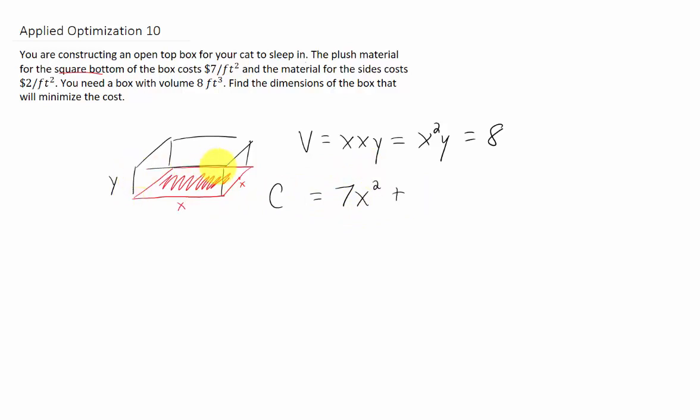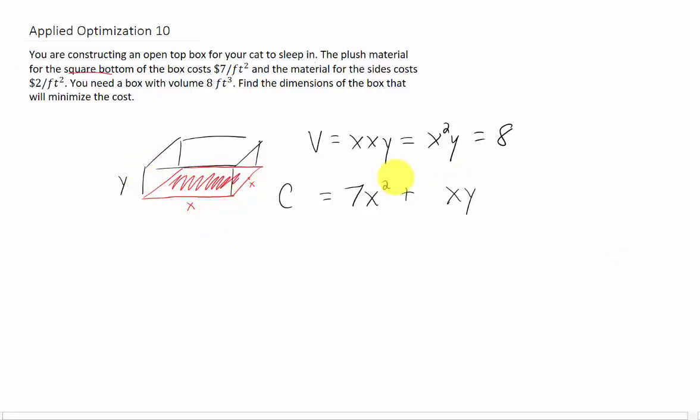Now for the sides, each side of this box has a width of X and a height of Y. So the area of each side is X times Y. We multiply that area times the cost per area, which is $2. But we also have four sides, so we multiply that whole thing by four. This gives us a cost formula of 7X² + 8XY.